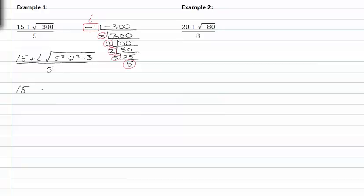So we get fifteen plus five times two times i root three all over five. Let's go ahead and rewrite, multiplying the five and the two together. So we get fifteen plus ten i root three all over five.